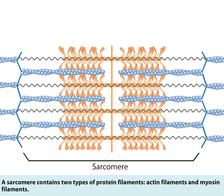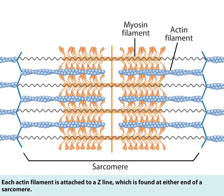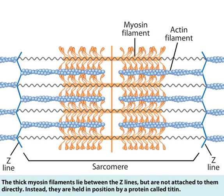A sarcomere contains two types of protein filaments: actin filaments and myosin filaments. Each actin filament is attached to a Z-line, which is found at either end of a sarcomere. The thick myosin filaments lie between the Z-lines, but are not attached to them directly.